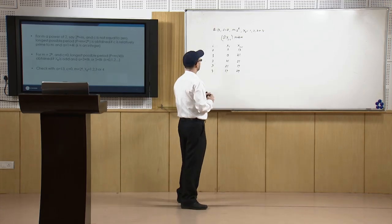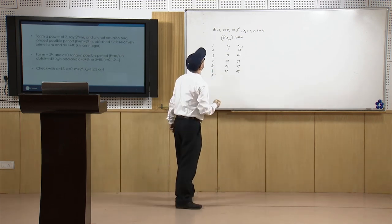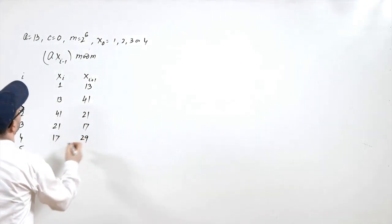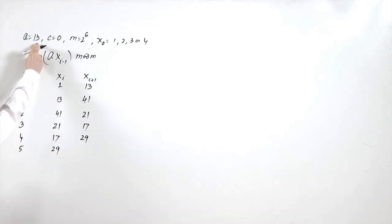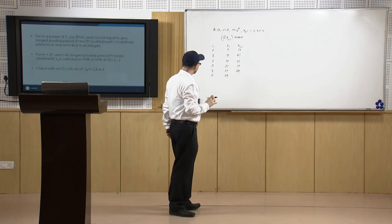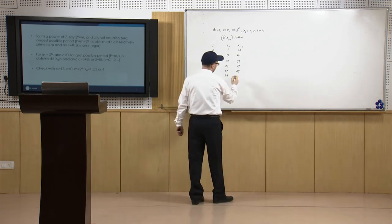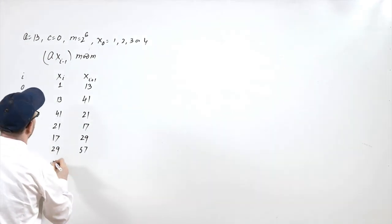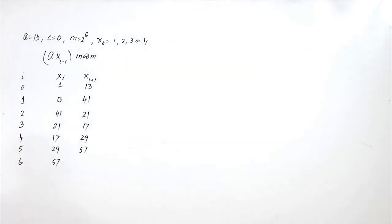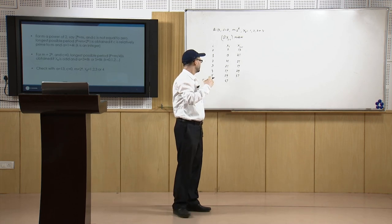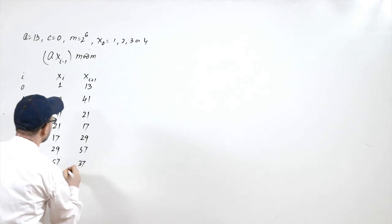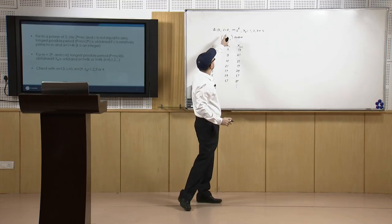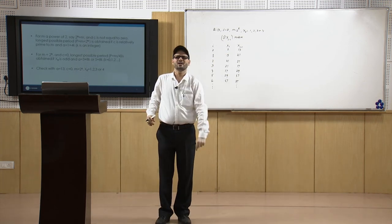This way it continues further. Taking 29 × 13 = 377, and 377 mod 64: 64 × 5 = 320, so it becomes 57. Then 57 × 13 = 741, and 64 × 11 = 704, so it becomes 37, and so on. Since c equals 0, if you proceed further you will see the period comes to 16.